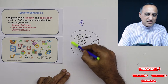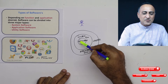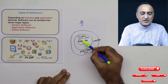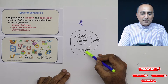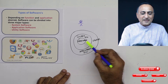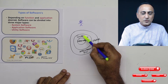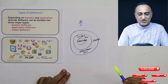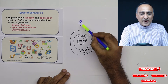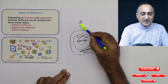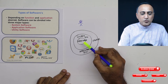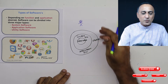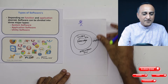Remember this diagram: the closest relationship with the hardware is the system software. Application software and utilities interact with the hardware through the system software — that is, the operating system like Windows or Linux. The user is able to use the computer thanks to application software and utilities, along with the operating system.